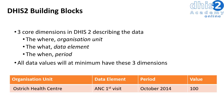We first start with the organization unit — this is where that value is collected from. We then have the data element, ANC first visit, which is what is being measured by that particular data value. We then have our period, October 2014 — this is when that value was reported. When we add these three dimensions to that data value, it now has meaning and we understand what it represents.